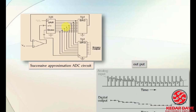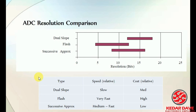The successive approximation circuit includes a DAC, SAR (Successive Approximation Register), and SRG circuits. Regarding ADC resolution comparison, successive approximation gives the highest resolution. The flash ADC is similar in resolution but has much faster speed compared to the other two types. Therefore, the flash ADC is recommended for analog to digital conversion when speed is important.